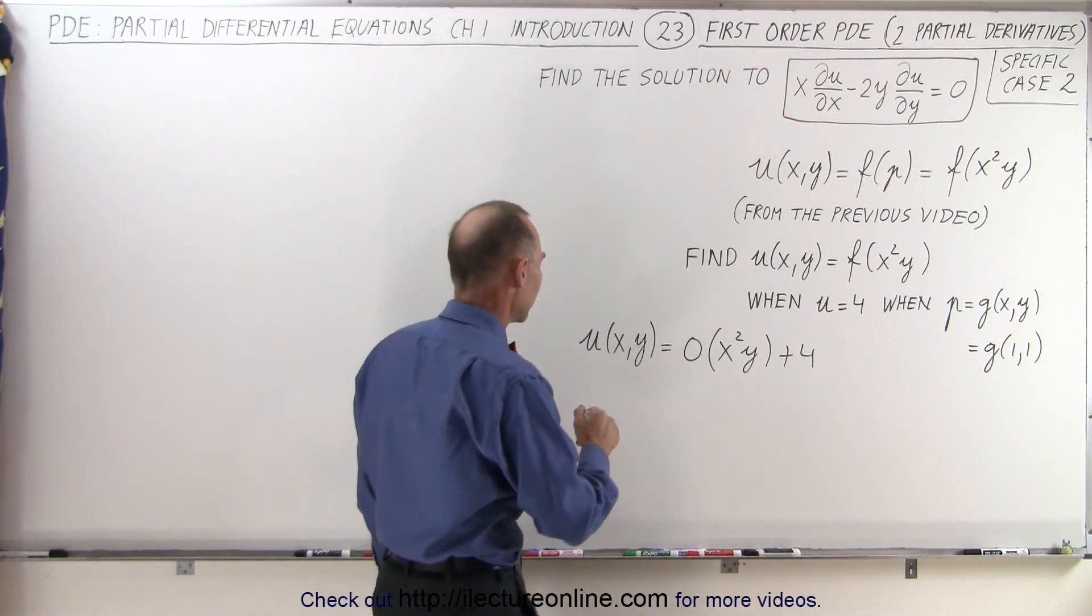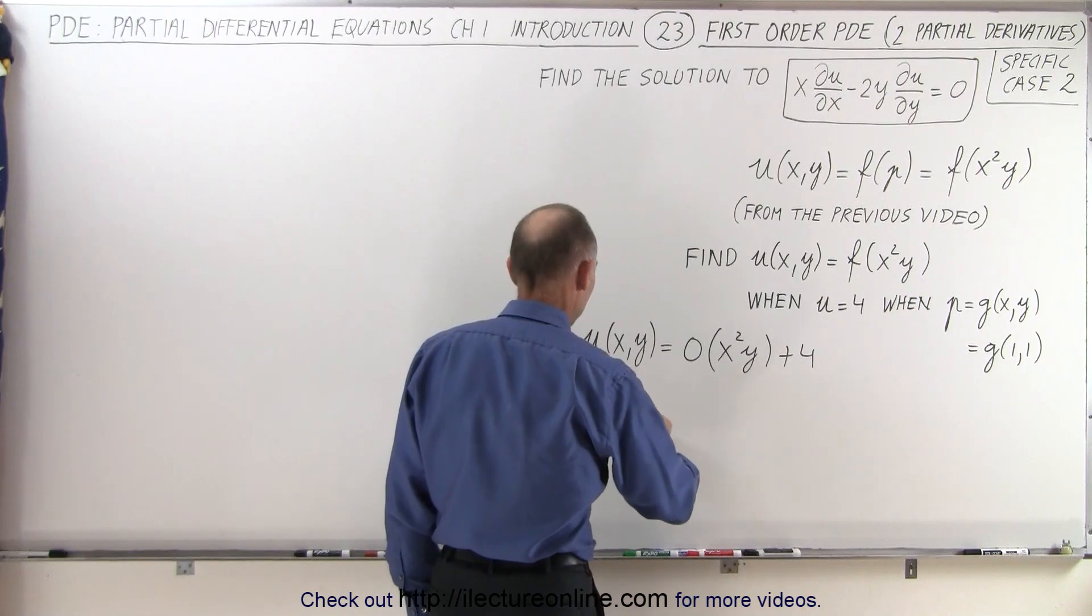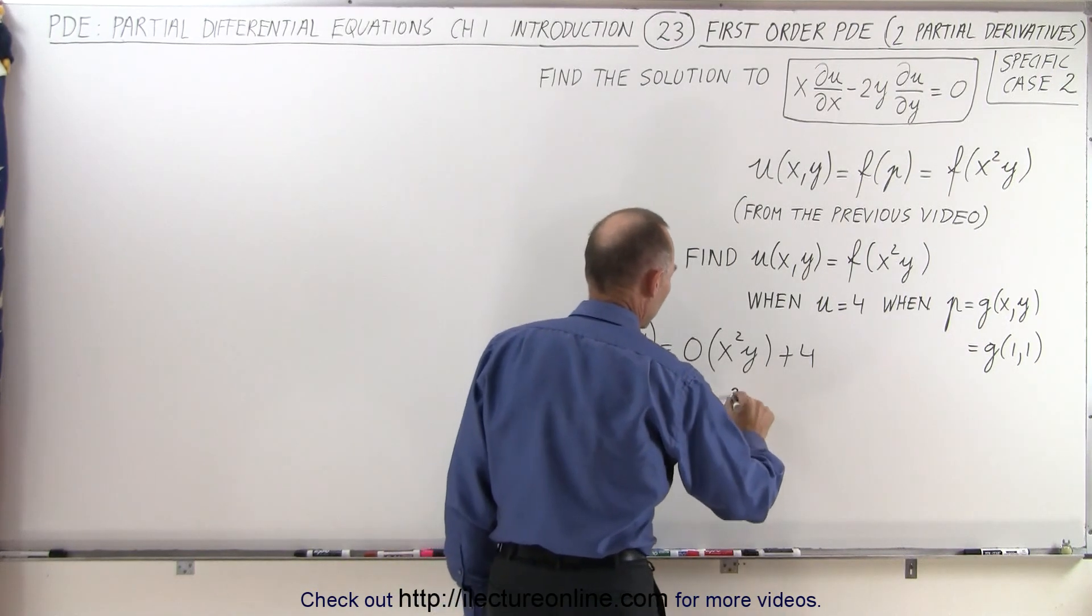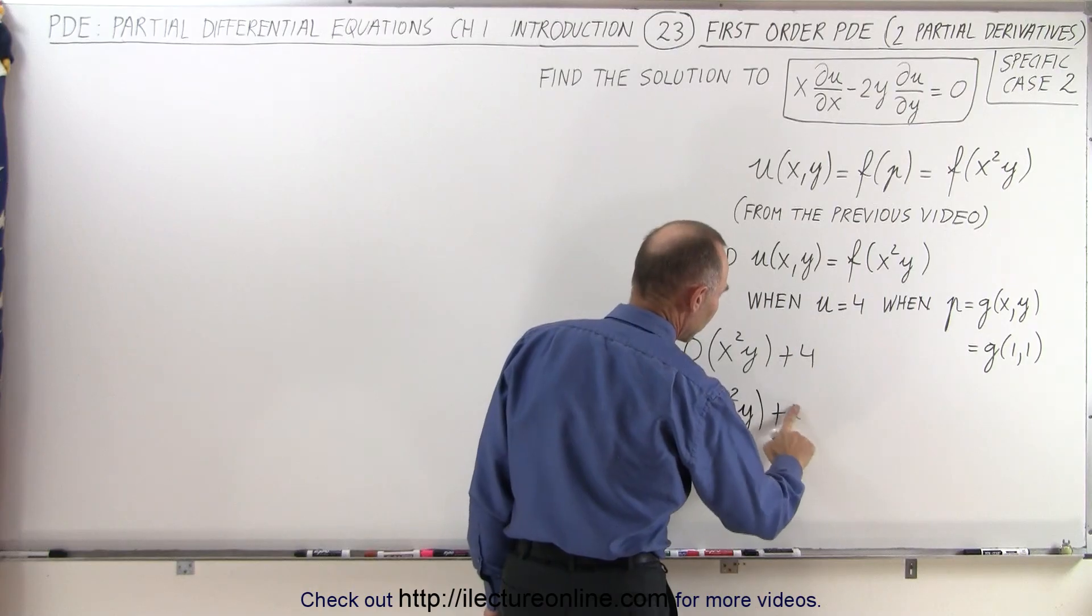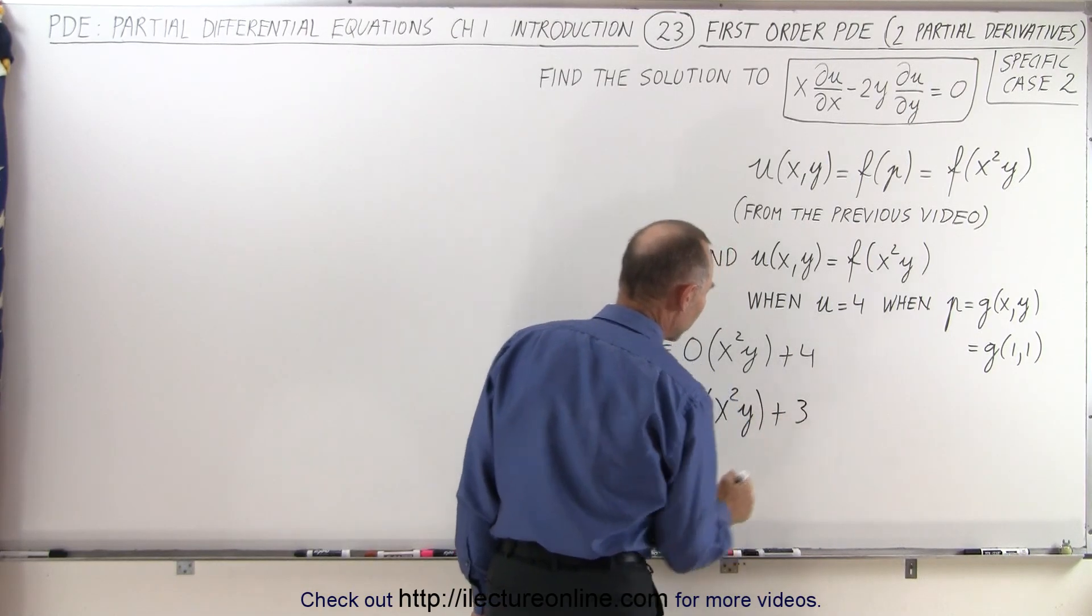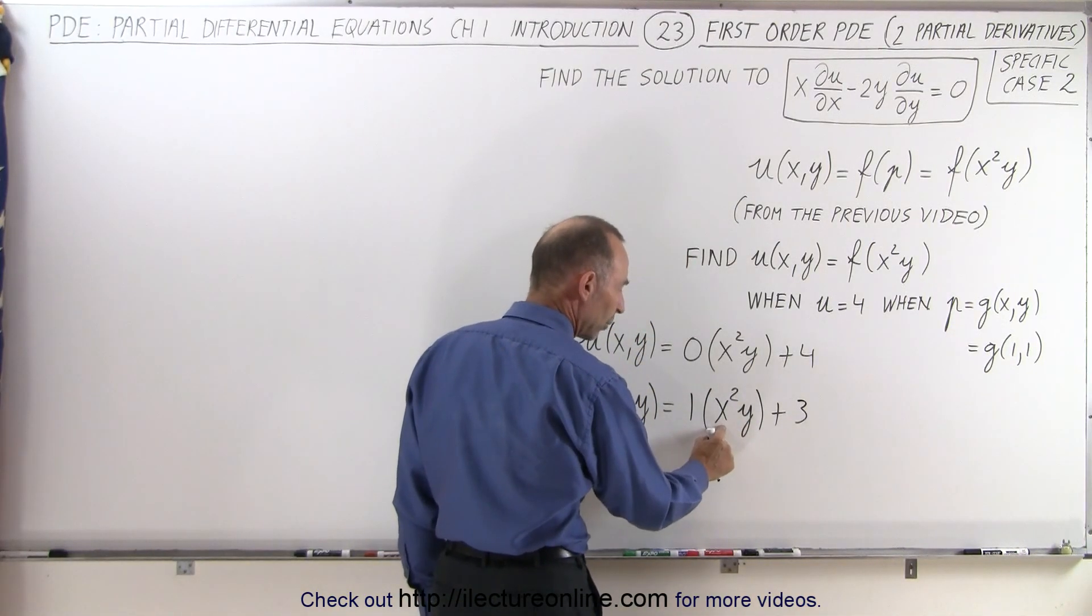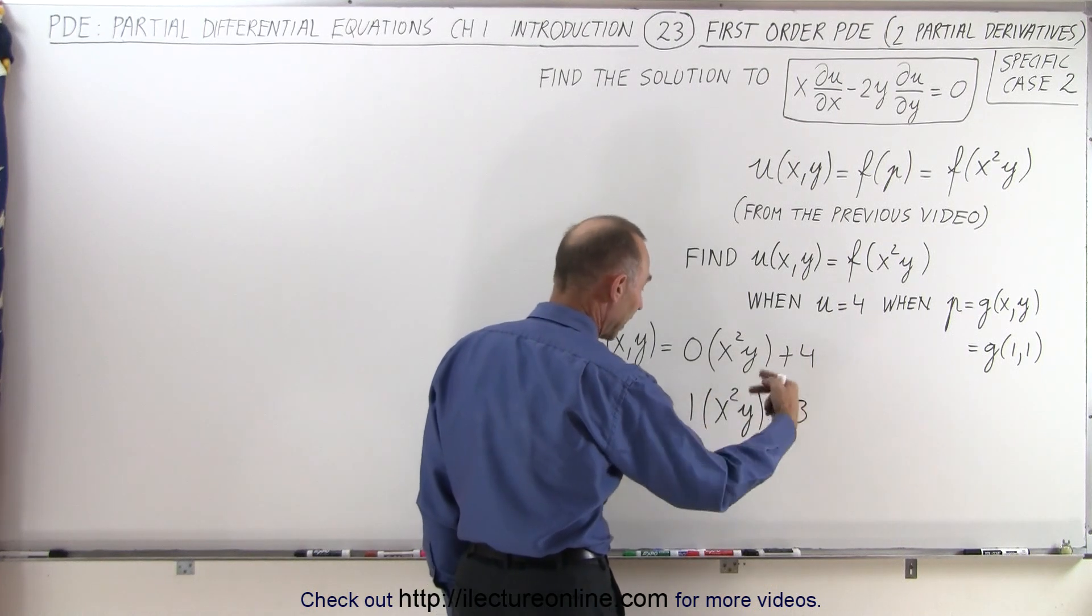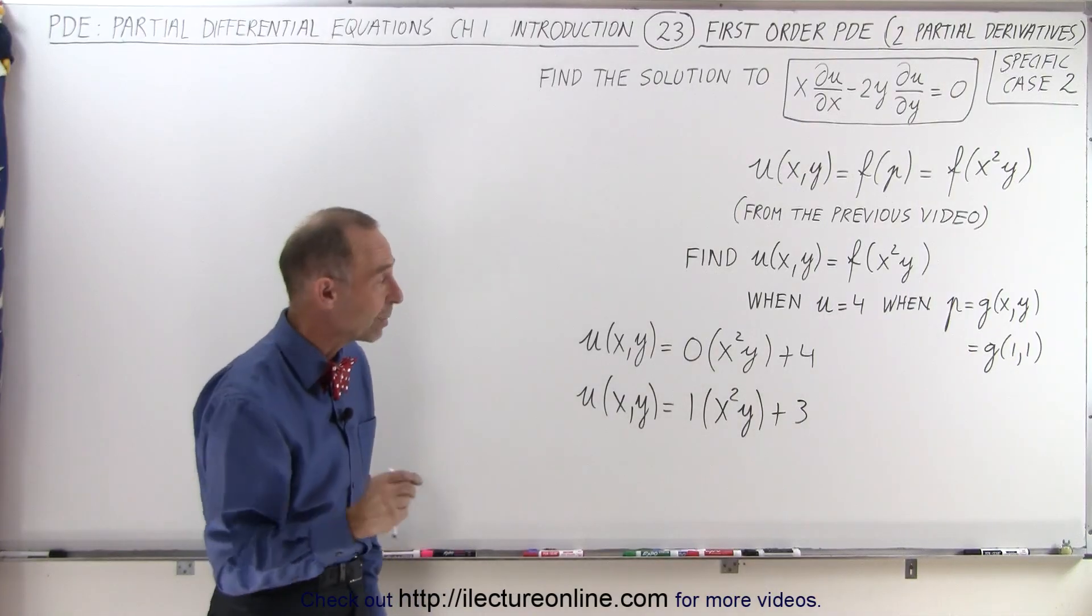What if we go u of x and y is equal to 1 times x squared y plus 3? Because if you plug in a 1 for x and a 1 for y, 1 squared is 1, 1 times 1 is 1, we get 1 plus 3 and that would indeed equal 4 and that's what we're looking for. It always needs to be equal to 4.